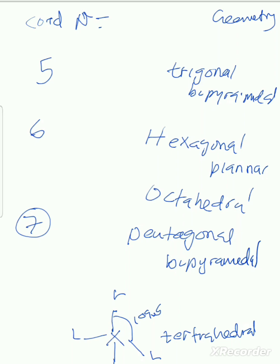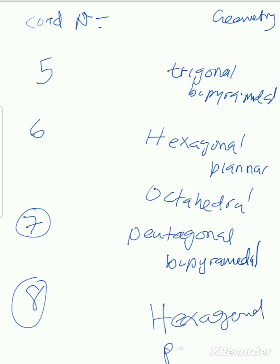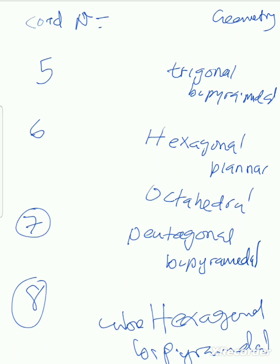For coordination number five, you can also say square pyramidal — so it can be trigonal bipyramidal or square pyramidal. For coordination number eight, the geometry is hexagonal bipyramidal, also called cubic in some books. Those are the coordination numbers together with their geometries. Thank you for watching — remember to subscribe and tell others. If you have any questions, inbox me.